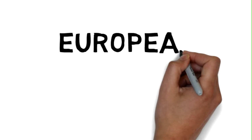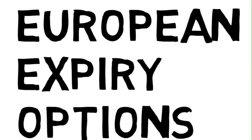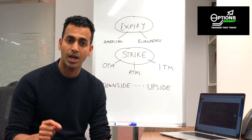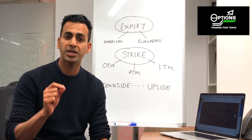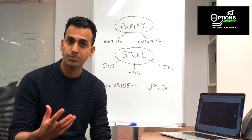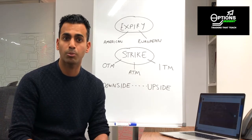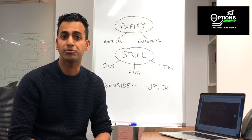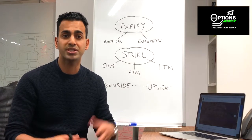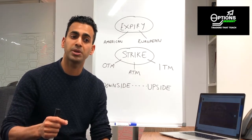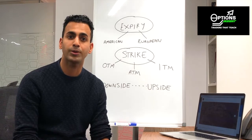European expiry options, on the other hand, only have a specific time and date that they can be exercised on. You tend to find European options more like index options. For example, on broad indices like the S&P 500, the FTSE, or the DAX, options on those tend to be European style expiry.